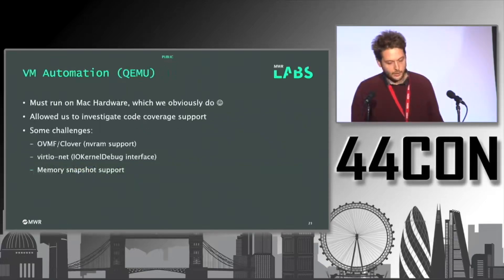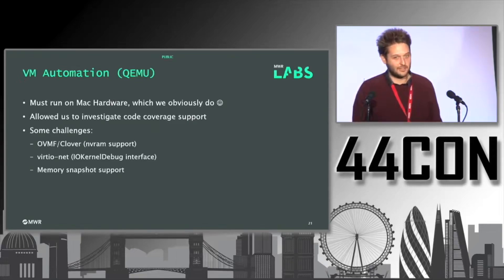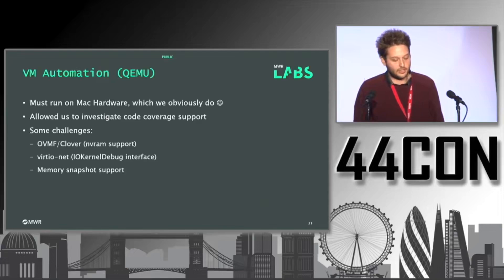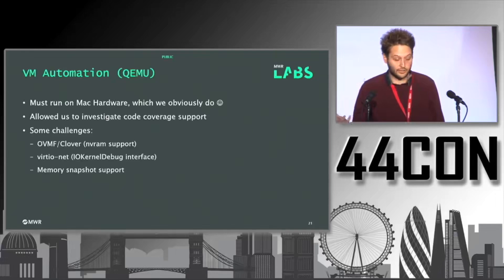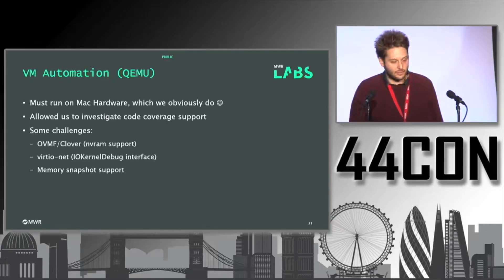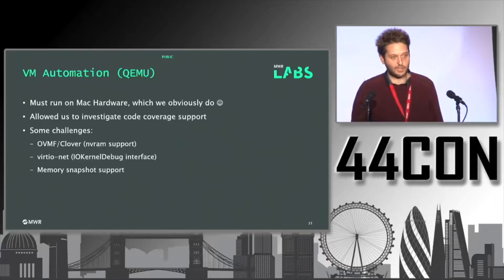We've also been looking at QEMU. You have to run this on Mac hardware per their licensing agreement, which we do. The reason we investigated QEMU is for code coverage support, which is a bit easier there. There were a few challenges — we had to mess around with OVMF and Clover for NVRAM support, use the IONet driver for the IOKernelDebug interface needed when we get a crash, and we couldn't send kernel dumps out over a network port. The remaining issue at the moment is memory snapshot support — under QEMU we have to reboot the whole VM on a crash rather than just reverting a snapshot.